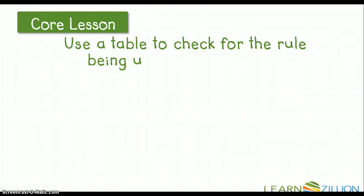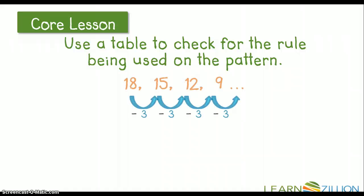So we're going to use a table to check for the rule being used on the pattern. And just as a review, using a table helps us to organize our information that we're gaining when we're looking at patterns, and it helps us to not get all flustered and lose track of our data. We want to make sure that we're organizing our data in a way that works for us.